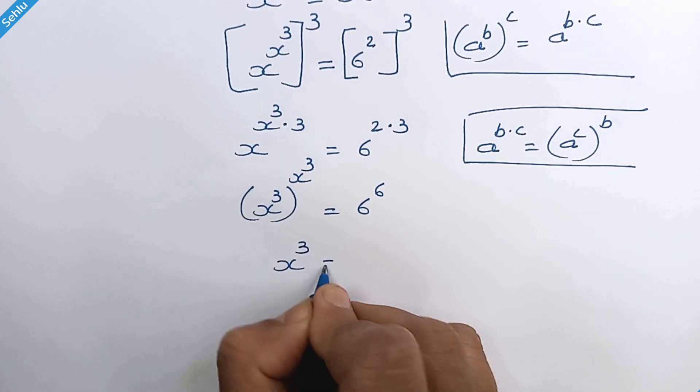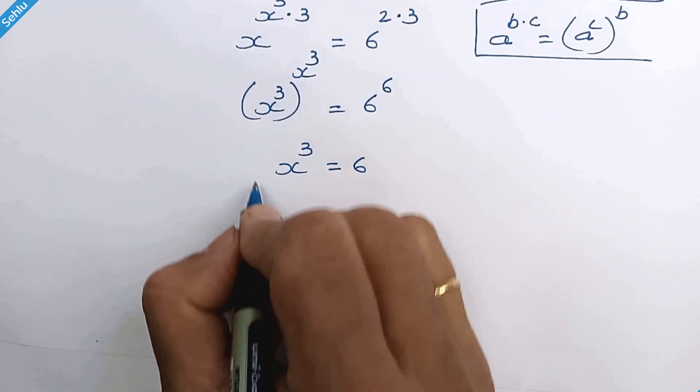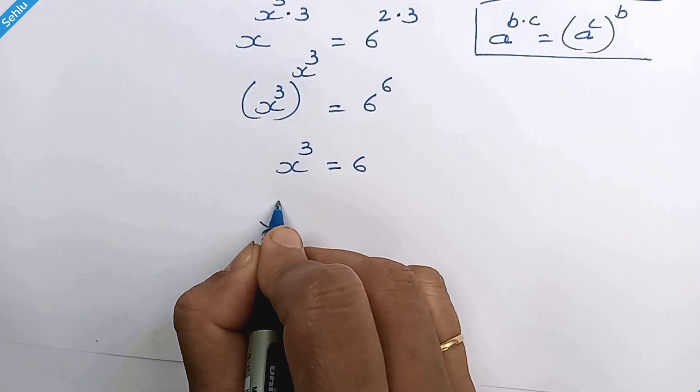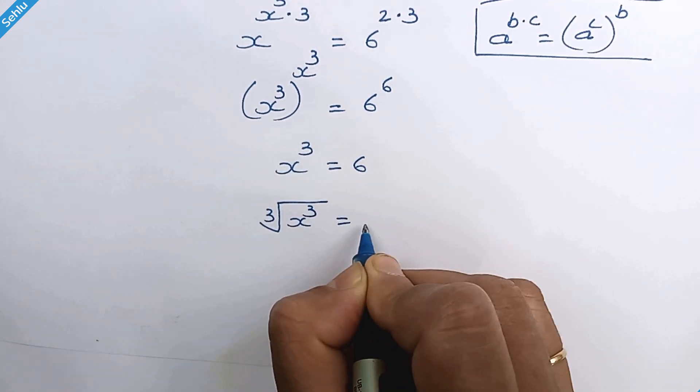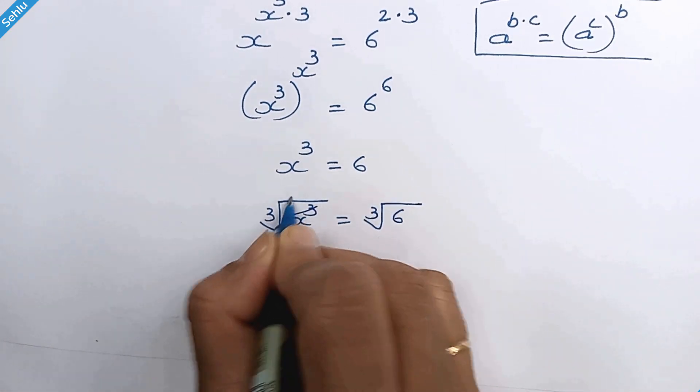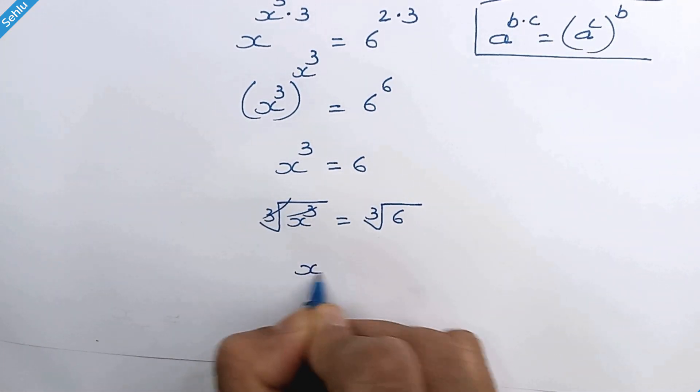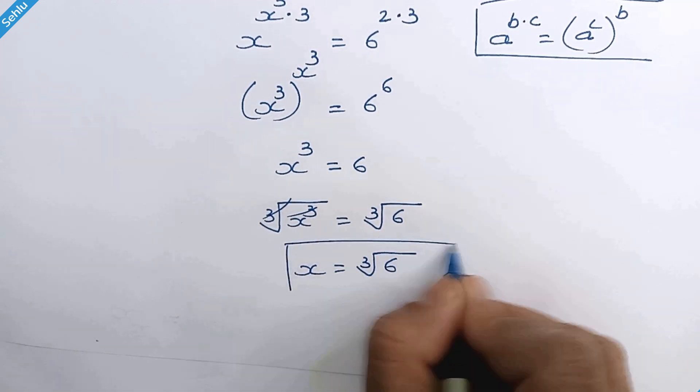If we take the cube root of both sides, we have x equals cube root of 6, and this is our answer.